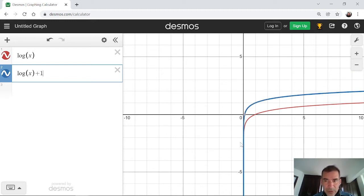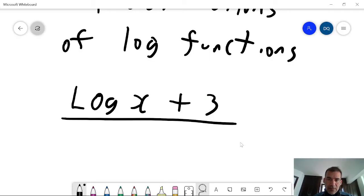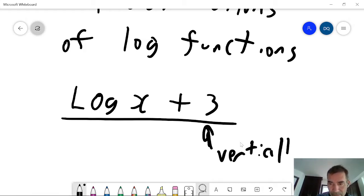I'll add 2, add 1, add a half, so you can gradually see the change. So adding 3 to it will shift it vertically up by 3.